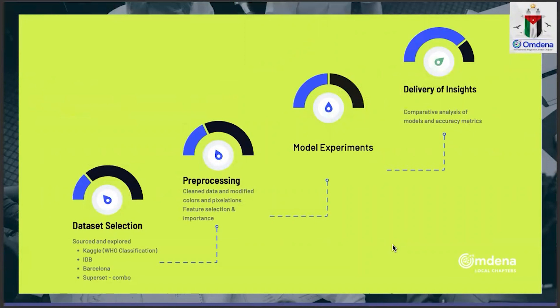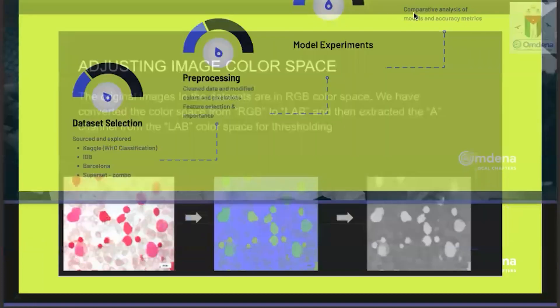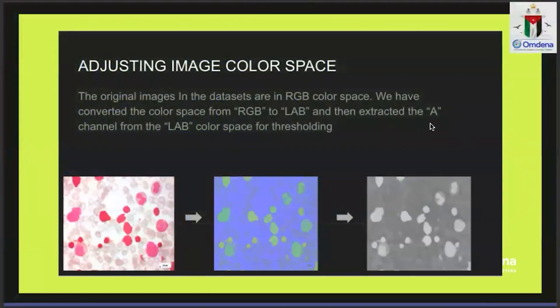We applied preprocessing, modeling, and further steps. The first thing we did was change the color space. Initially the images were in RGB — red, green, blue color space. We decided to convert this into LAB and extract the alpha channel, which had the lowest noise-to-feature ratio. So we decided to extract the alpha channel.